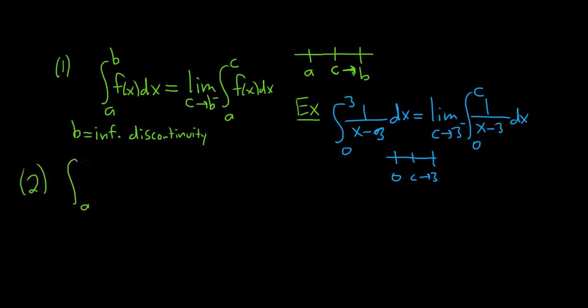Say we have the same thing, a to b, f(x) dx. OK, and let's say this time a is an infinite discontinuity. So as before, we replace a with a variable. Let's use c. We keep the f, we keep the dx. OK, so we're approaching a. So c is approaching a from the right.